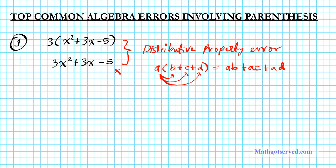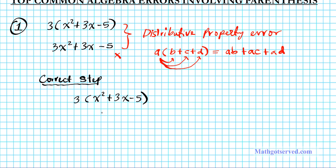So let's correct our mistake. We have 3 times x squared plus 3x minus 5. This 3 has to be distributed to all 3 terms. A good habit to avoid mistakes is to use arrows as a visual to ensure you've distributed the number in front of the parenthesis to every single term — one, two, three arrows for three terms. So the answer becomes 3x squared plus 9x minus 15. This is the correct application of the distributive property.